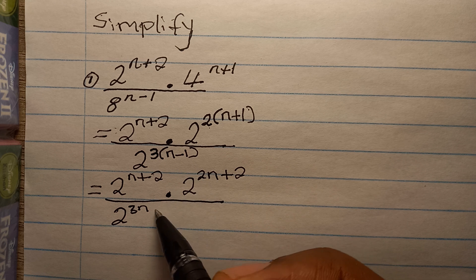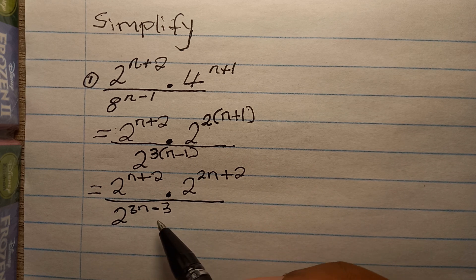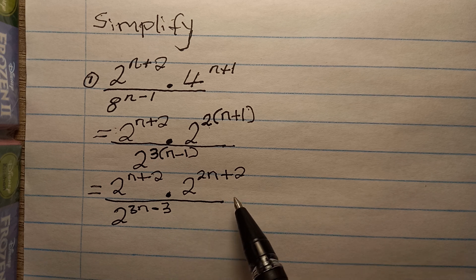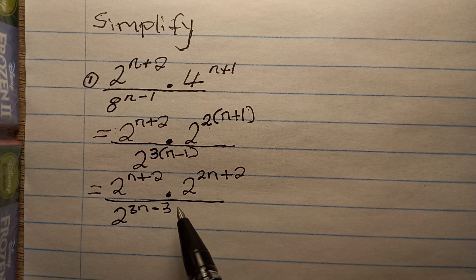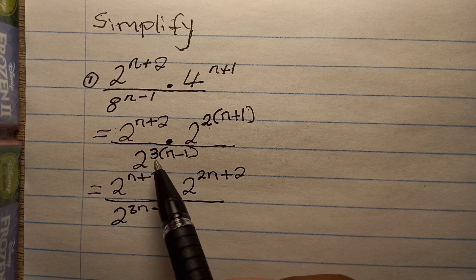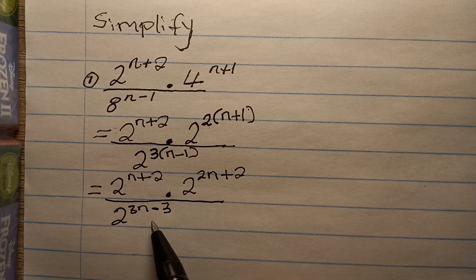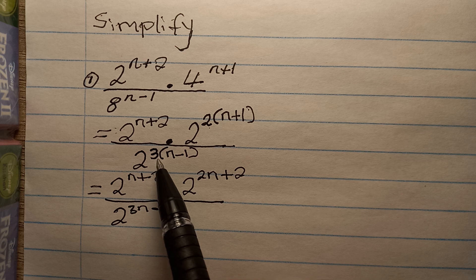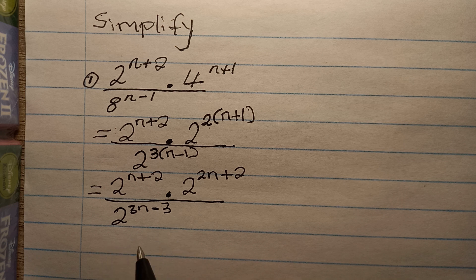Continuing now with our prime base two: in the numerator we have two to the power n plus two, multiplied by two to the power 2n, multiplied by two to the power two — that's two times positive one equals positive two. Now, since we are multiplying, we add the exponents. For the denominator we have three times n which is 3n, and three times negative one which is negative three.